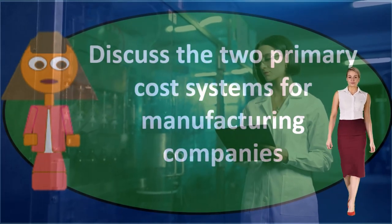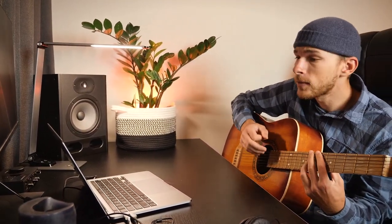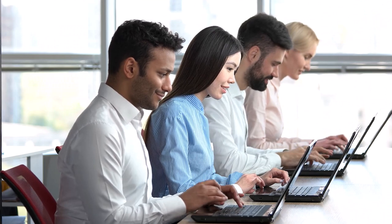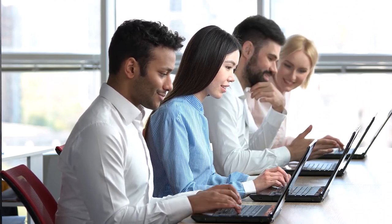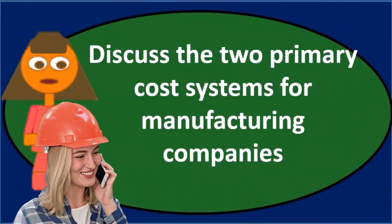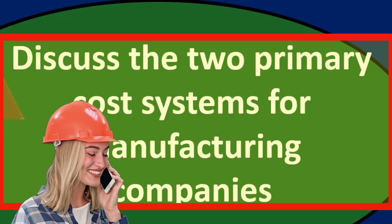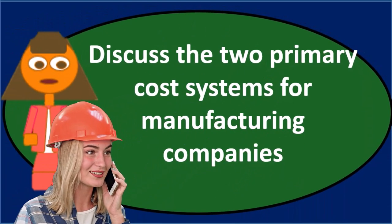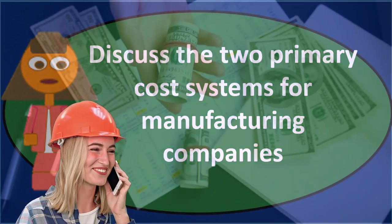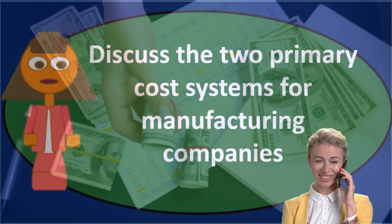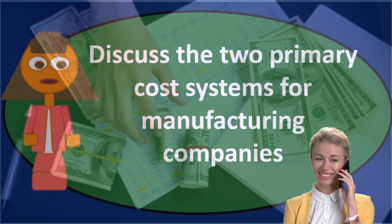We will typically use two types of systems to track inventory based on the characteristics of what we're making. For example, if we make very customized items — custom jewelry, custom guitars, or construction jobs where all jobs are different — then we're going to have to apply the costs to specific jobs. When we start a new job, we apply costs to whatever we're working on. They have unique characteristics, so the costs will not be the same from job to job. If we make two custom necklaces, one could cost much more than the other, and therefore we have to track the costs separately. That's going to be a job cost system.